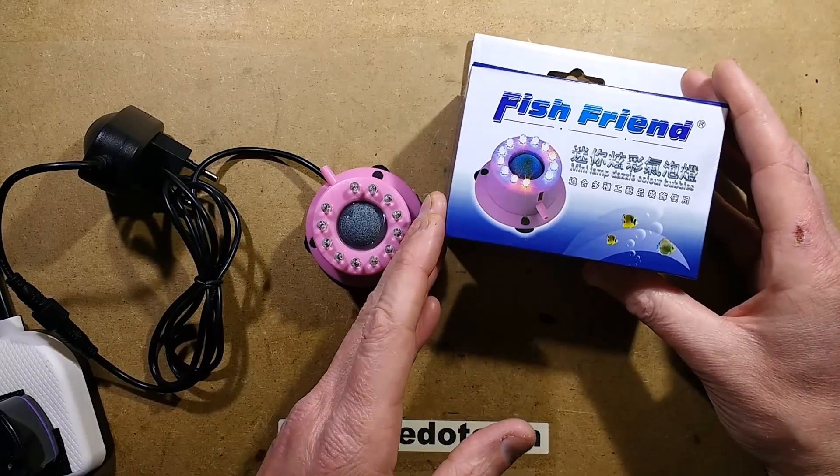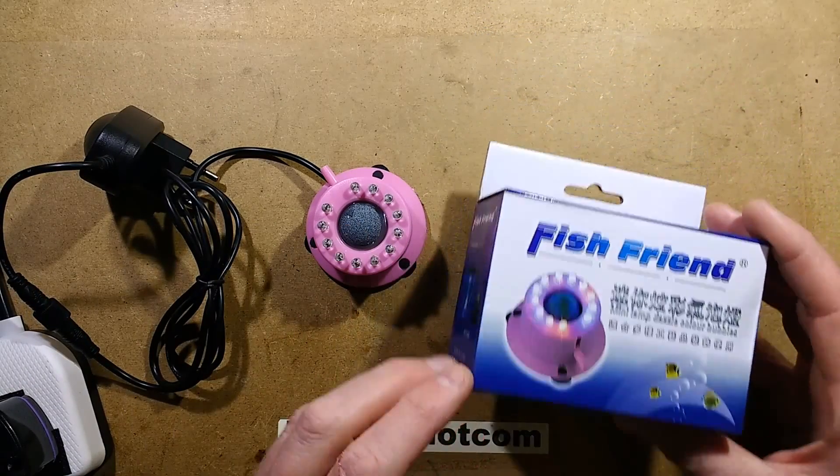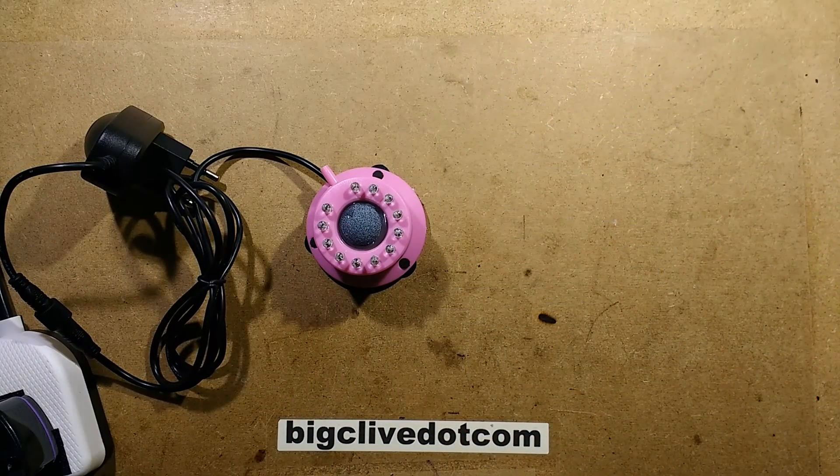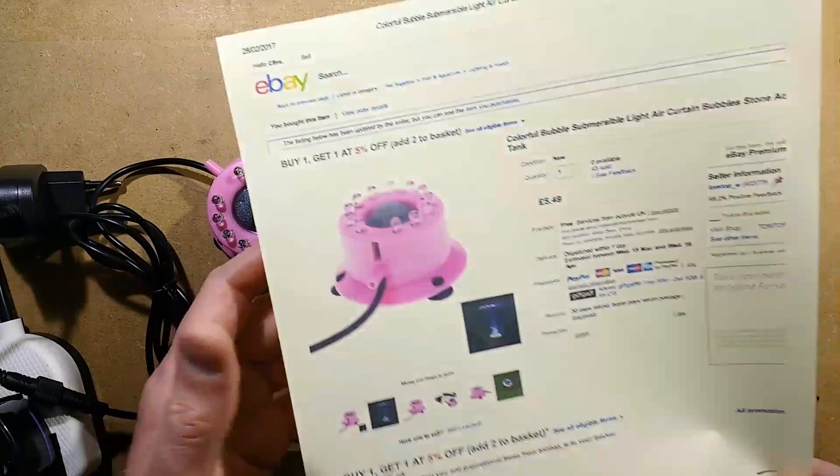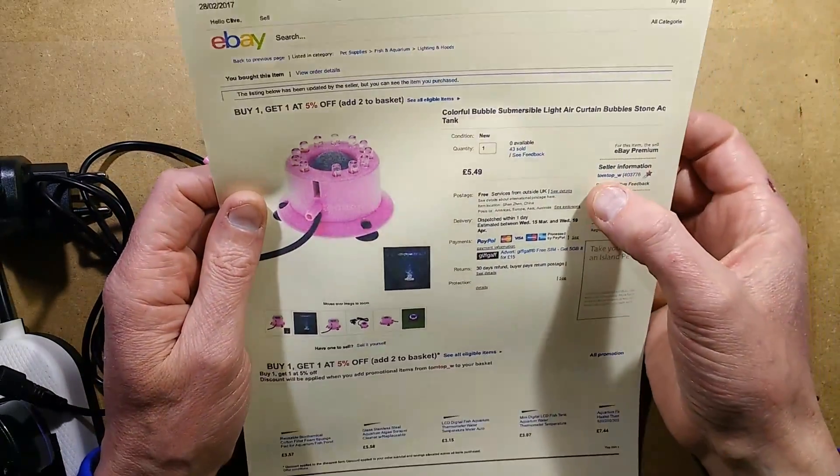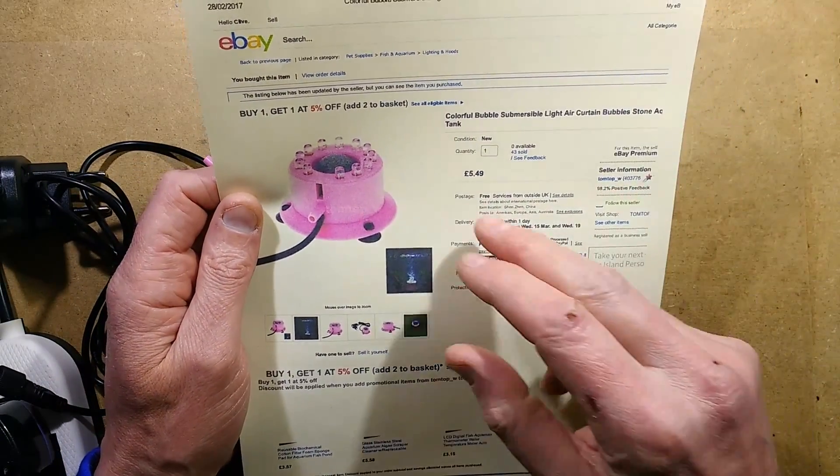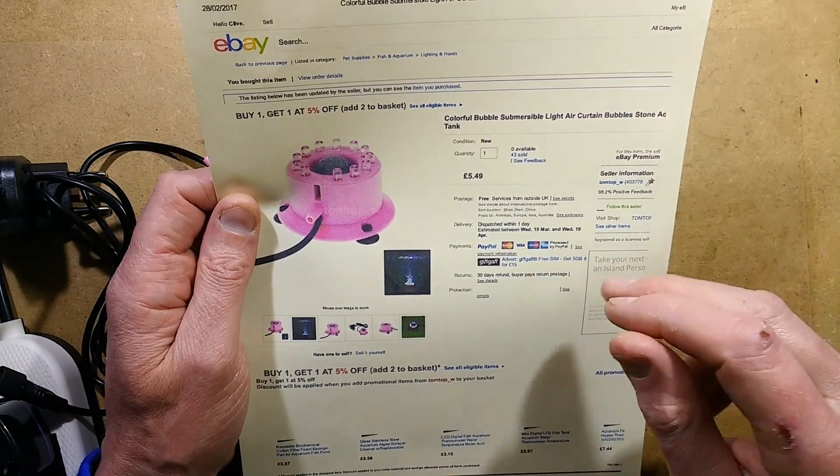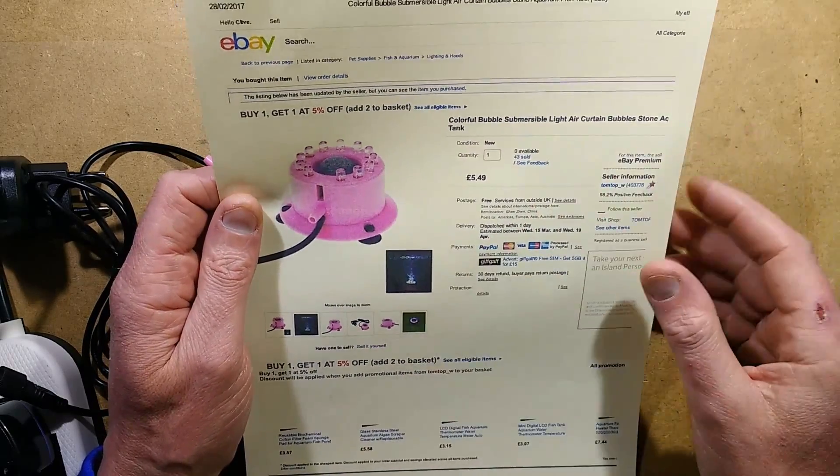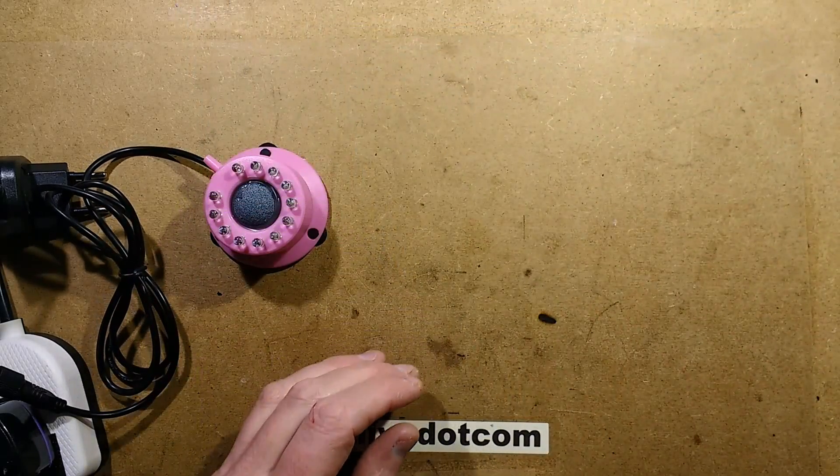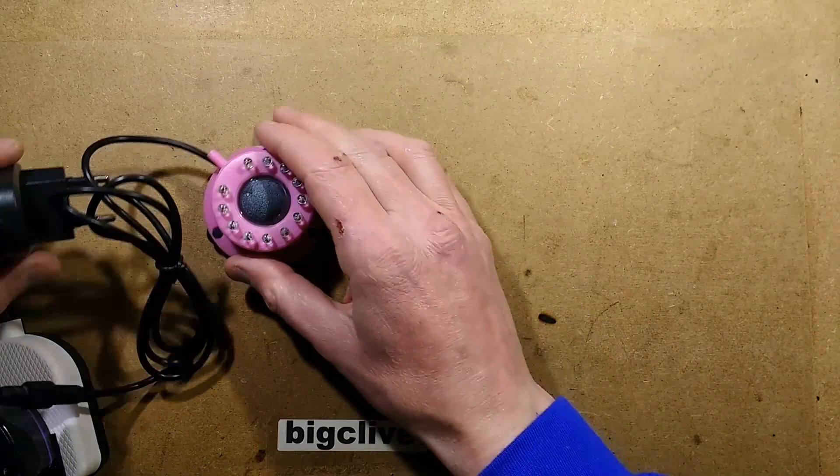This is called the Fish Friend, although in that case it might not necessarily be that friendly. This particular one came from Tomtop. Submersible light air curtain bubble stone. I wouldn't recommend buying one of these, I wouldn't recommend putting it in your fish tank. Let us investigate this a bit further.